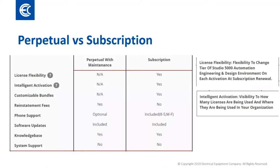Many of the software selections in the portal are available as either perpetual or subscription. A perpetual license is delivered as a permanent license with renewable maintenance terms. Contract renewals will affect any maintenance and support terms, while the license stays intact and unaffected in a perpetual state. A subscription license is subject to expiration at the end of the contract. Both options include software updates, access to the knowledge base, and phone support. Overall cost of ownership and corporate software policies can dictate the path to either a subscription or perpetual license contract.